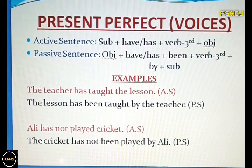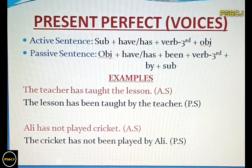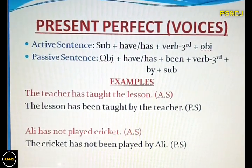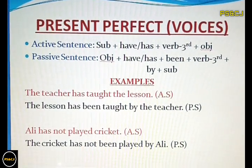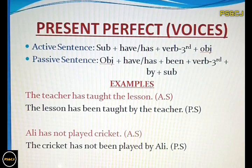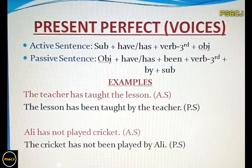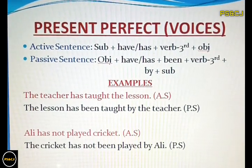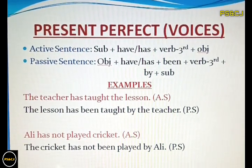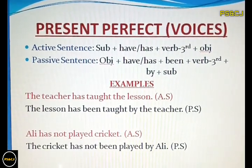The next example is negative: 'Ali has not played cricket.' In negative sentences of present perfect tense, you are supposed to put 'not' between 'have' or 'has' and 'been'. The rest of the formulation is the same. I hope it is clear.